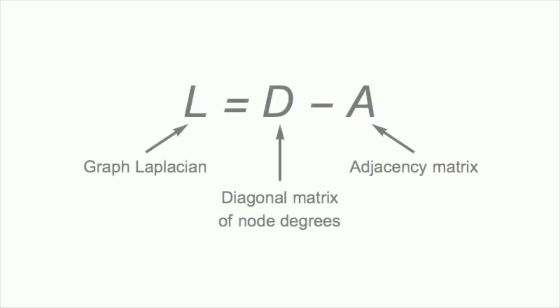This duality generalizes to nonplanar graphs by considering its associated graphic matroid and its dual. Algebraically, this duality is reflected in the graph Laplacian, a matrix operator related to diffusion throughout a graph, and whose spectrum reveals information about the graph's global structure. Indeed, many sparsification and coarsening algorithms aim to preserve properties associated with the graph Laplacian.